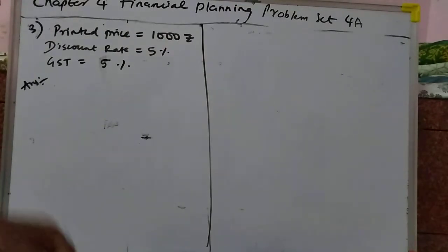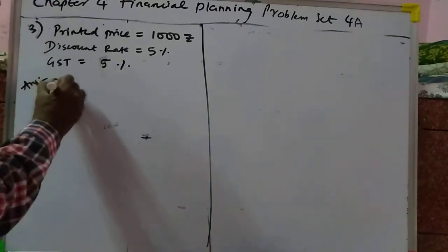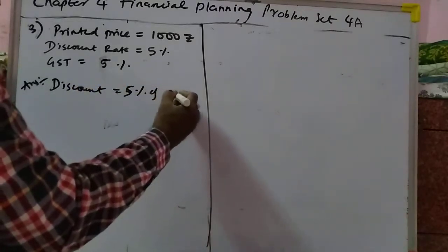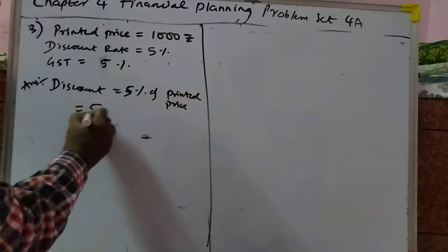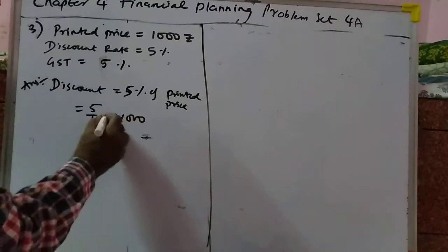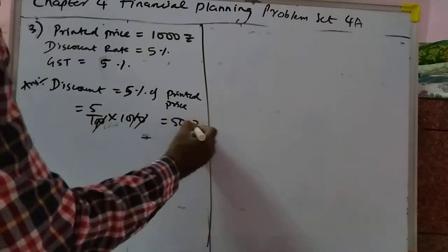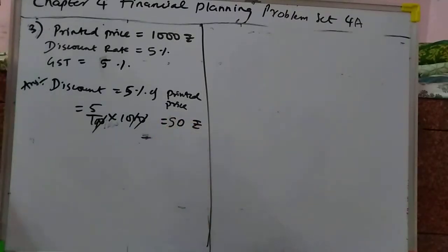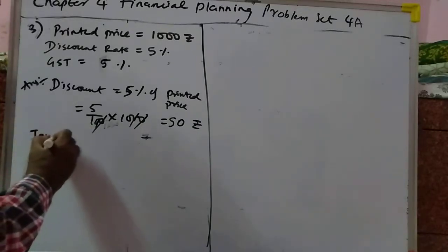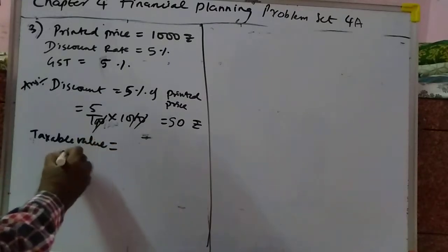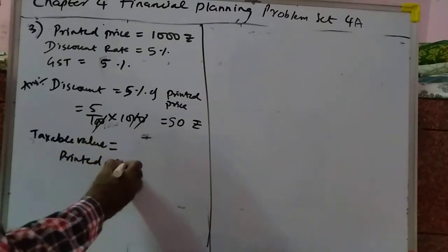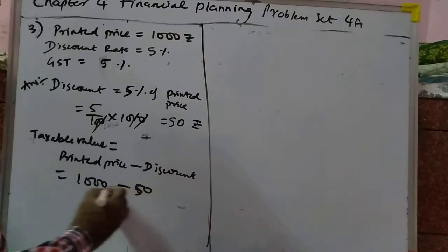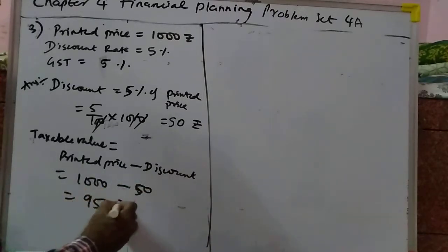Next we move on to the third problem. We have to find the purchase price. First calculate the discount: discount is equal to 5% of printed price, so that will become 5 upon 100 into 1,000. Cut the zeros and you will get 50 rupees.